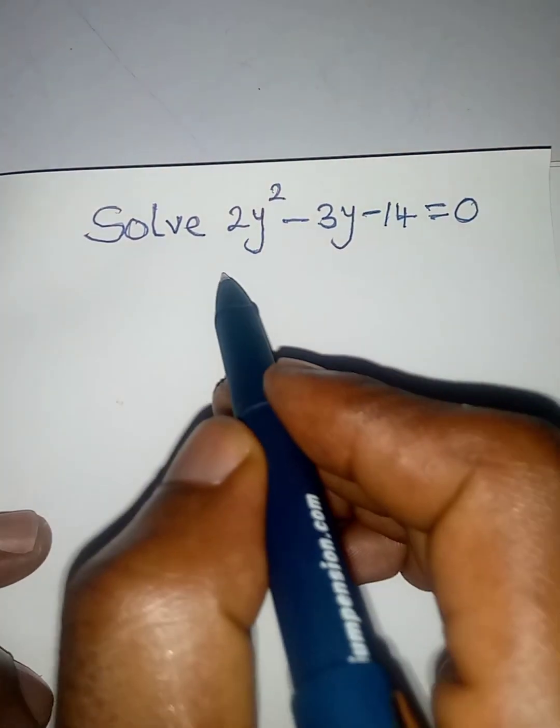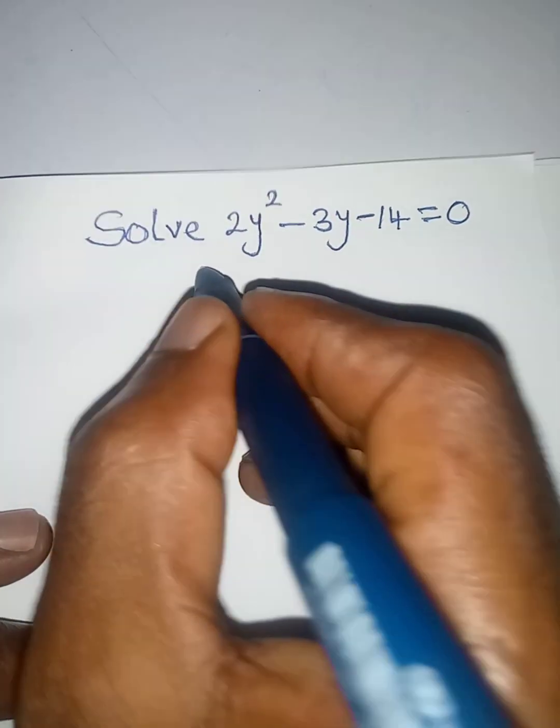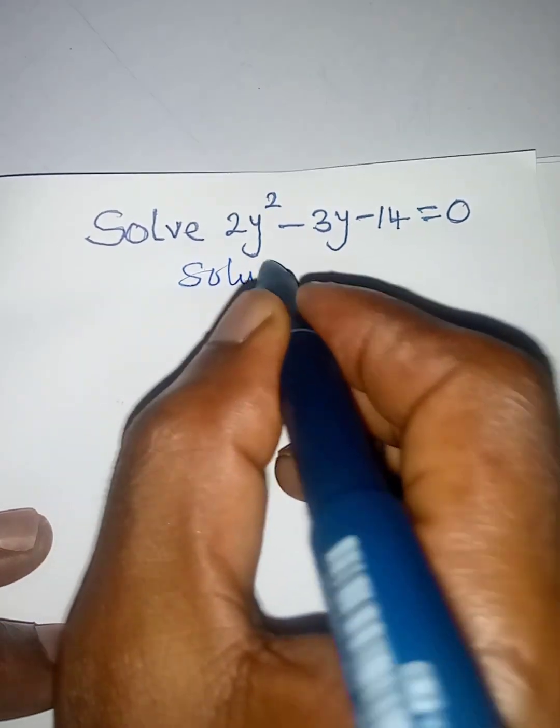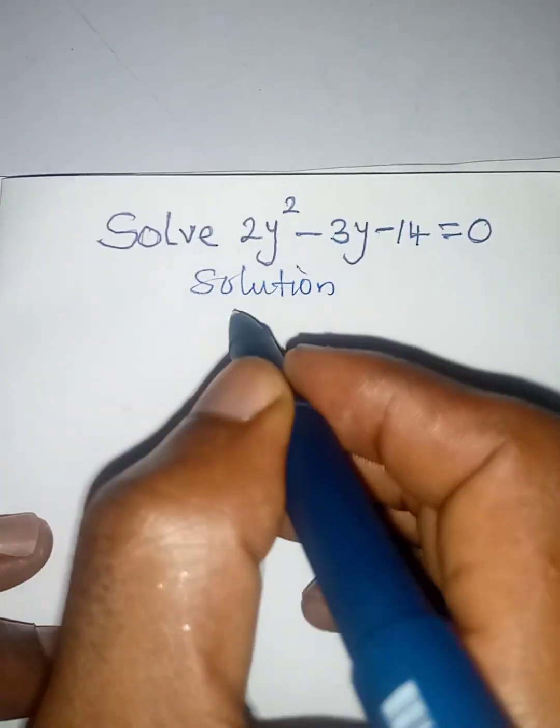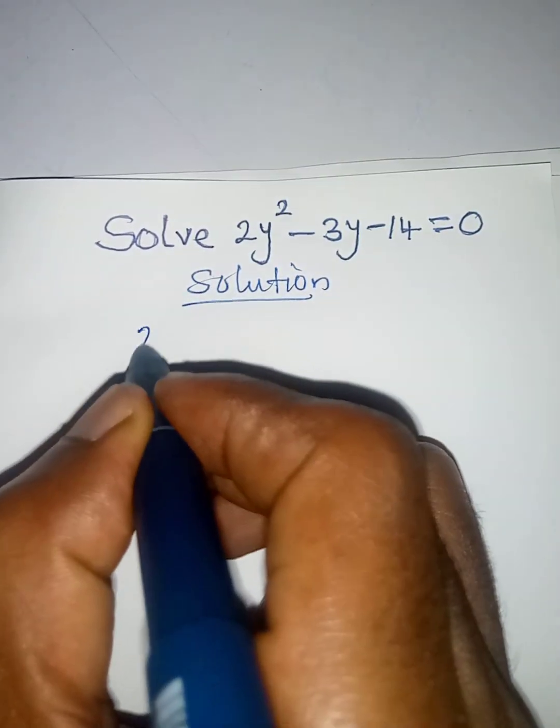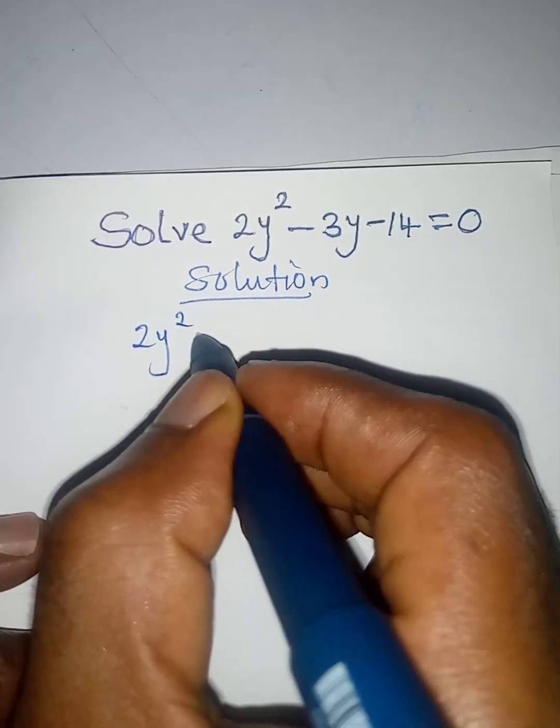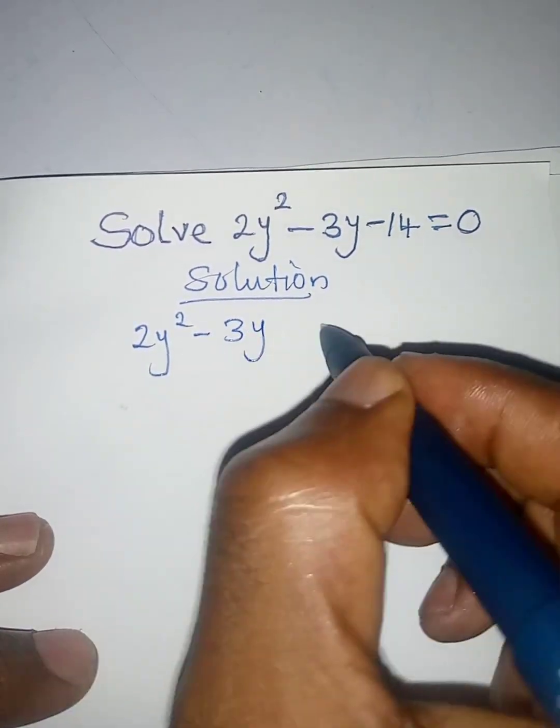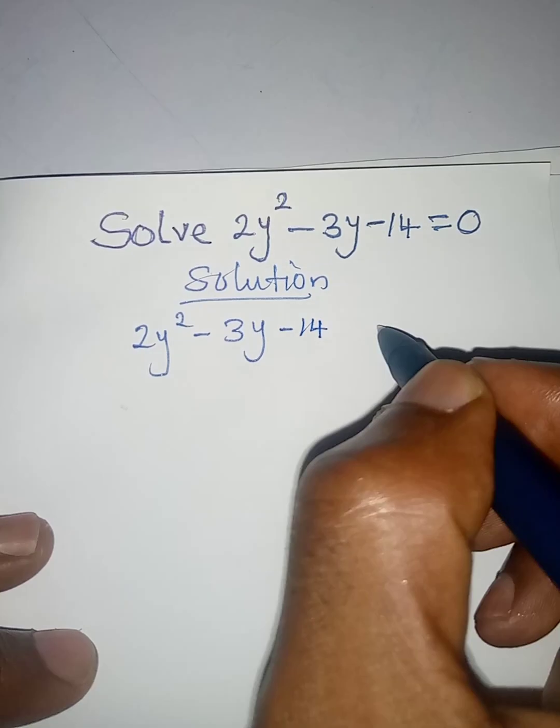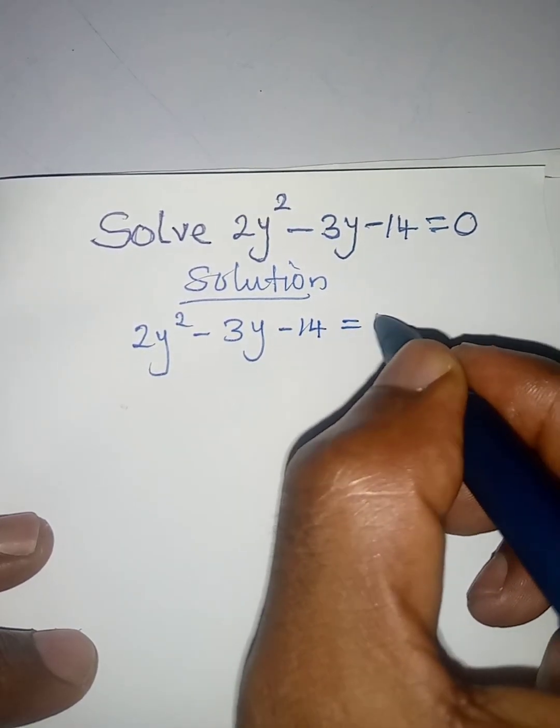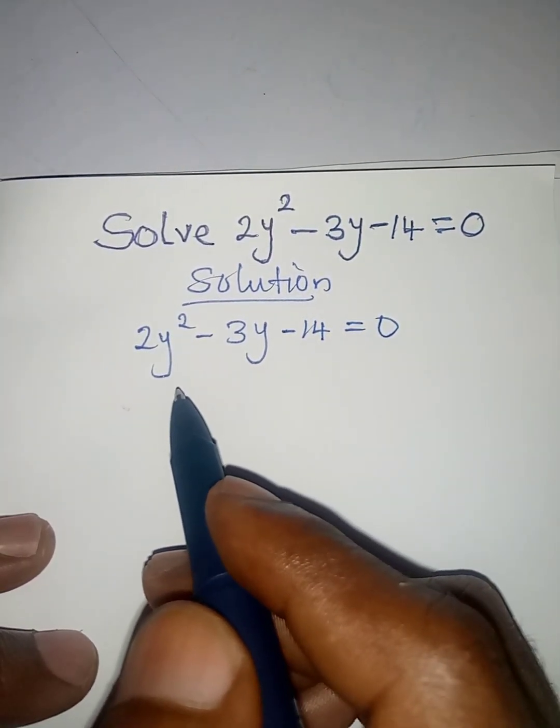Hello everyone, let's solve this quadratic equation. We have 2y² - 3y - 14 = 0 and I want us to solve this using